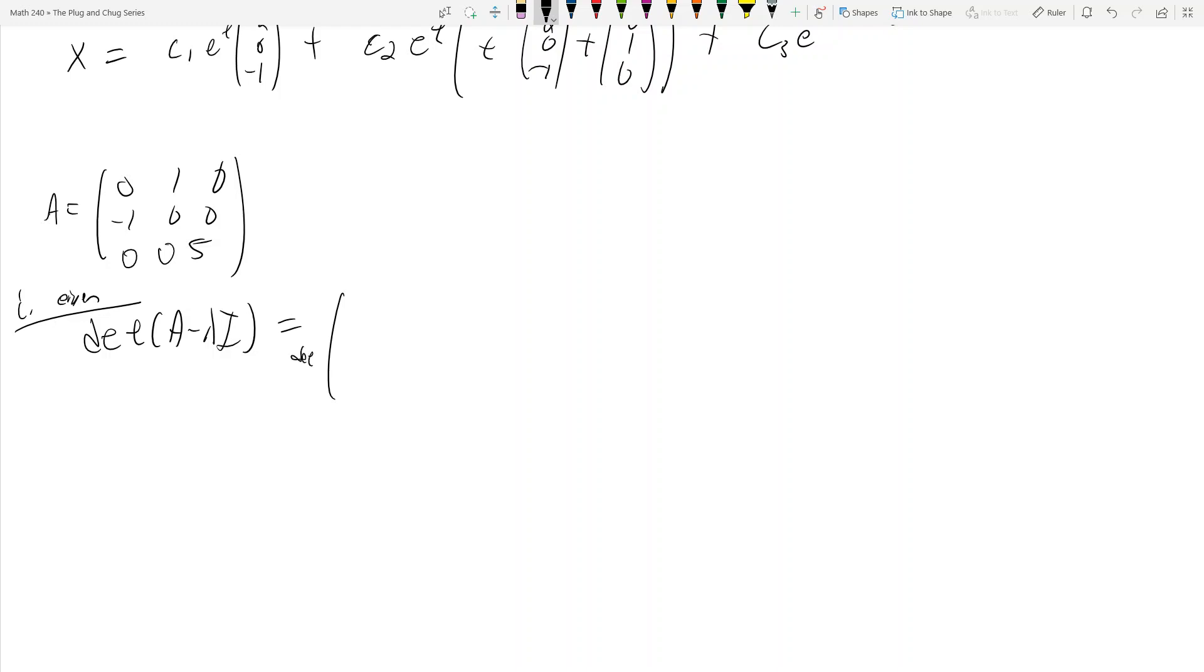So what's that determinant? Then it's the determinant of negative lambda, 1, 0, negative 1, negative lambda, 0, 0, 0, 5 minus lambda, okay? And then this is equal to, well, if you expand along this bottom one, this becomes 5 minus lambda times lambda squared plus 1 plus 0, okay?